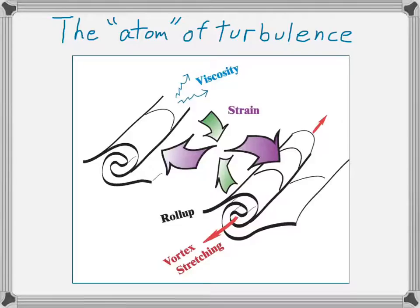So where does this come up? One interesting example is this thing that I like to call the atom of turbulence. It's a sort of elemental structure that we see over and over again in turbulent flows. You have one or more vortices, more or less parallel to each other, curving around, and in between them are regions of strong strain. The vortices are amplified and maintained by vortex stretching, and that vortex stretching is balanced by the diffusive action of viscosity, which tends to diffuse the vorticity away.